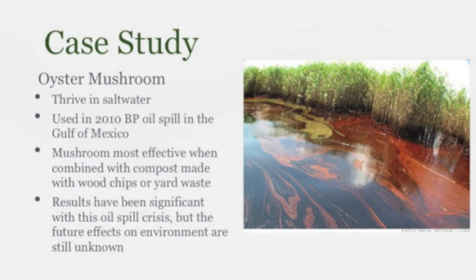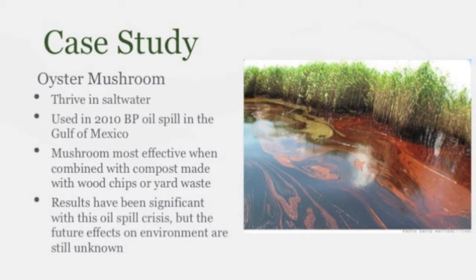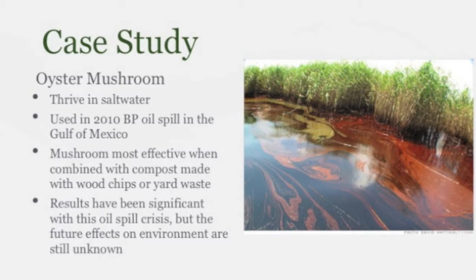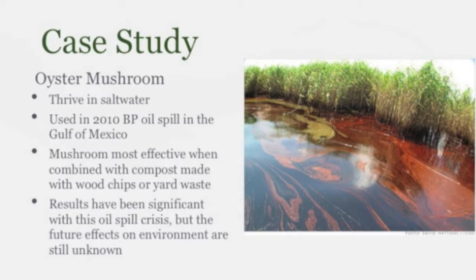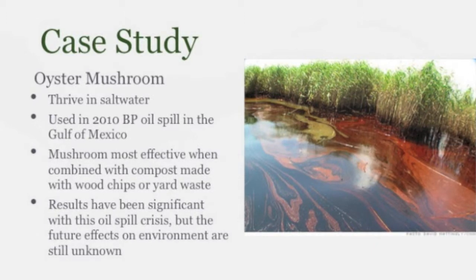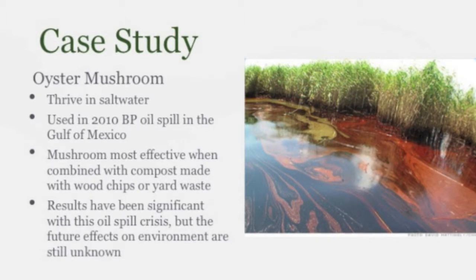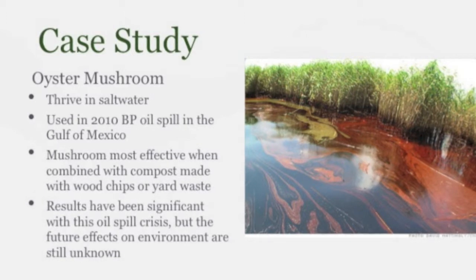Our second case study is about the oyster mushroom. This mushroom thrives in saltwater and was used in the 2010 BP oil spill in the Gulf of Mexico. The aged mycelium of this fungus forms the oyster mushroom, and when combined with compost, the result is better degradation than either could achieve alone. This mushroom has various enzymes to break down a wide variety of hydrocarbon toxins. Researchers tested inoculated diesel-contaminated soil with oyster mushrooms and found that they reduced the concentration of toxic hydrocarbons from a dangerous 1,000 parts per million to just under 200 parts per million over a 16-week period.